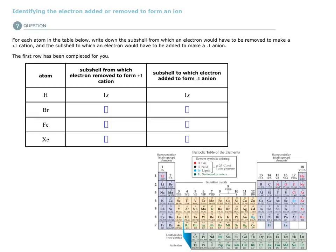Welcome back. This is an Alex training video on identifying the electron added or removed to form an ion. We did an example like this earlier that was quite easy, I think.